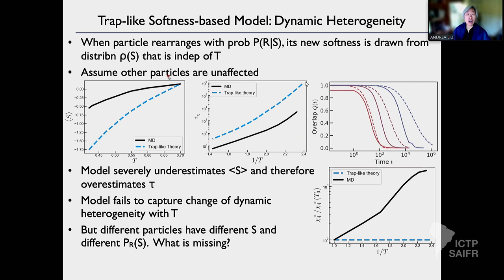We assume everything else is unaffected and let this thing go — the softness distribution evolves with temperature. This is what comes out. The black is the ground truth — molecular dynamics simulations — and the blue dashed line is the predictions of this theory. I call it a trap-like model because it's very analogous to the ideas of the trap model by Jean-Philippe Bouchaud from the 1990s.